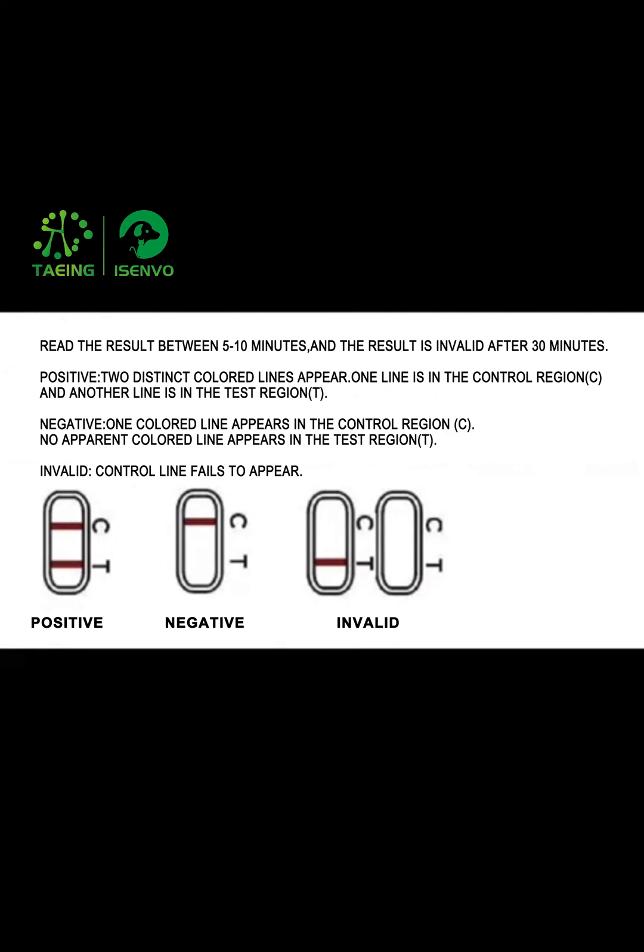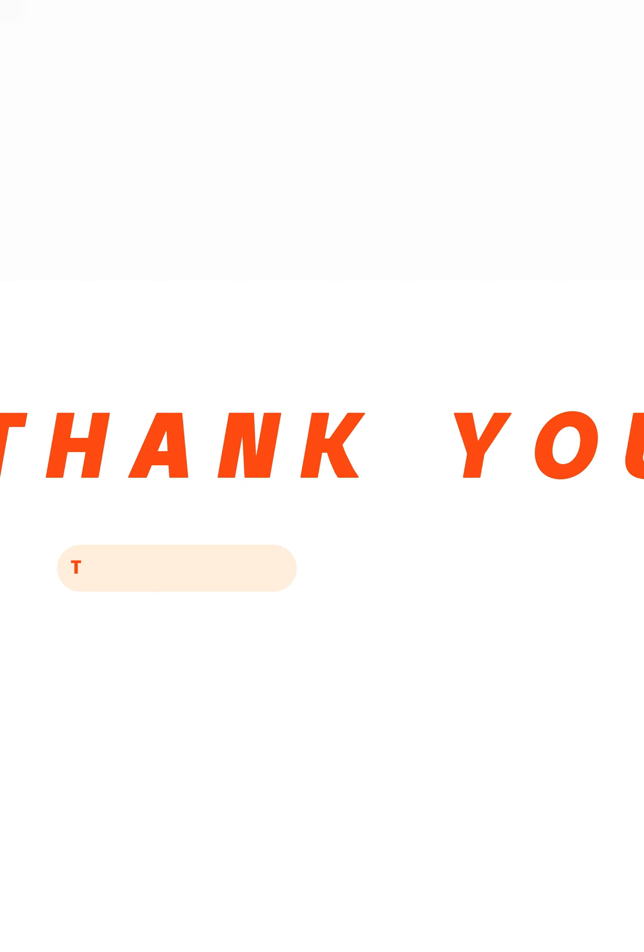Negative: one colored line appears in the control region C; no apparent colored line appears in the test region T. Invalid: control line fails to appear.